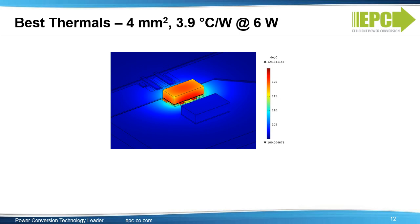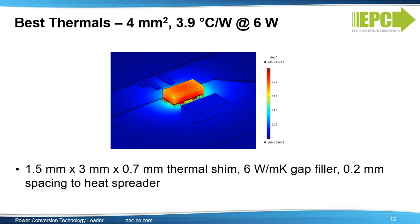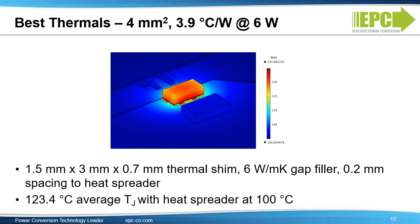Here's the thermal image of that best case. We've added the 1.5 by 3 by 0.7 millimeter copper shim, used the 6 watt per meter Kelvin gap filler, and have 0.2 millimeter spacing from the top of the device to the heat spreader. You can see the maximum temperature is 125 degrees C, with the heat spreader held at 100 degrees C.